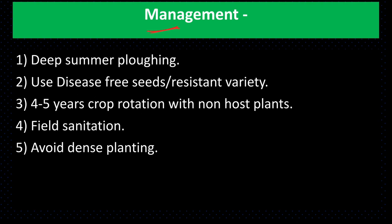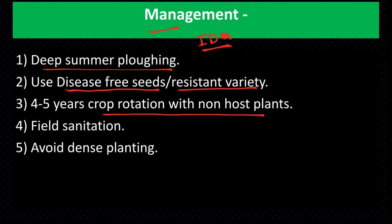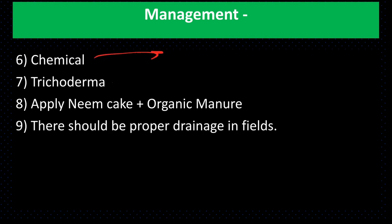Management: For management of this disease we should adopt integrated disease management practices like summer deep ploughing, use of disease-free seeds, growing of resistant varieties, crop rotation with non-host for at least 4–5 years, field sanitation, avoid dense planting, spray of chemicals like mancozeb, carbendazim, hexaconazole, application of Trichoderma, application of neem cake and organic manure, and proper drainage of the field.